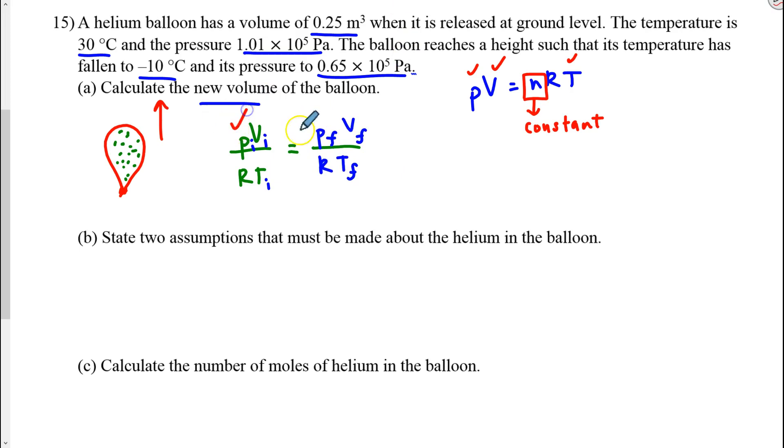Because after all, we know the initial pressure. That value is 1.01 times 10 to the 5 pascals. We have the initial volume, 0.25 meters cubed. R is in our data booklet. And the initial temperature is not 30, because that's Celsius. The initial temperature will be 273 plus 30.